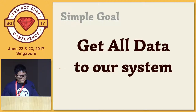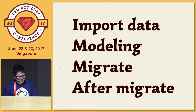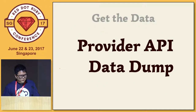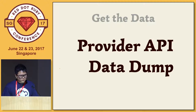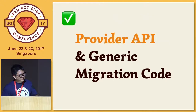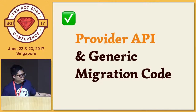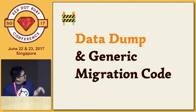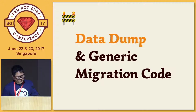The simple goal is to get all data to our system, but it's very hard to achieve. We only need to do these four things. First, get the actual data you need to migrate. There are two ways: if your provider can provide an API you can access all the data, or you can get a data dump from the database. At Cookpad we already have generic migration code for the API case; today I'm talking about migration for a data dump.